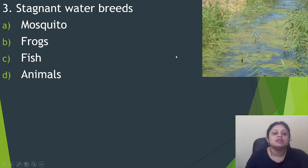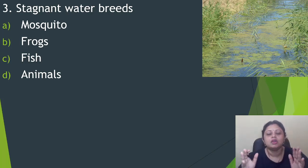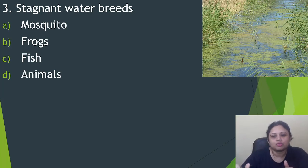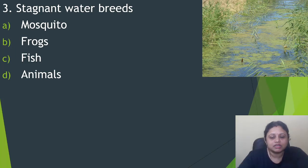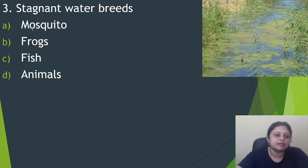Next question: stagnant water breeds? Option A, mosquito. B, frogs. C, fish. D, animals. Stagnant water is water held somewhere. If stagnant water is there for a long time, then mosquitoes breed there. So stagnant water breeds mosquitoes.